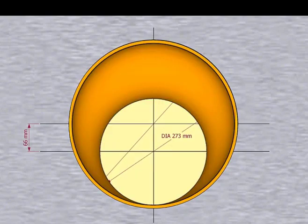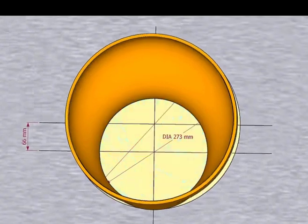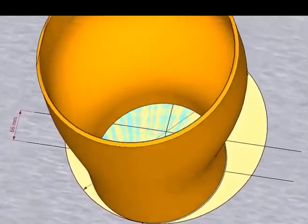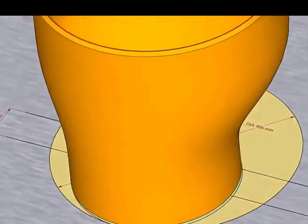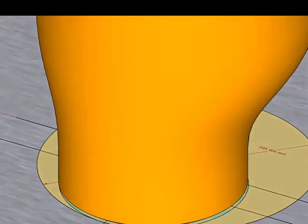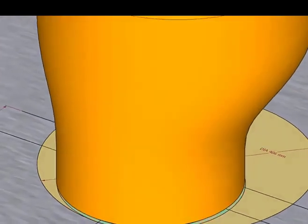Place the reducer on the layout, facing the small end down.